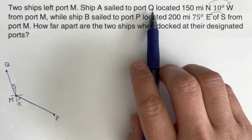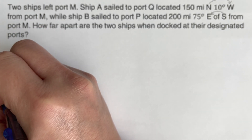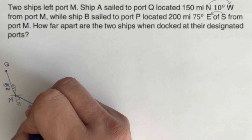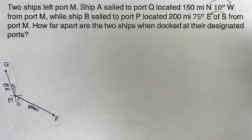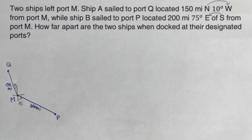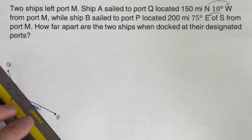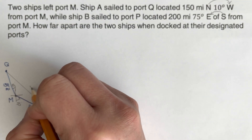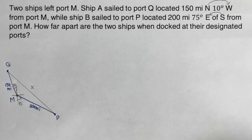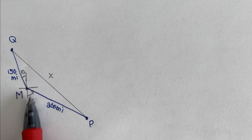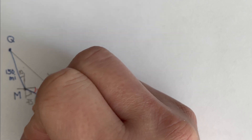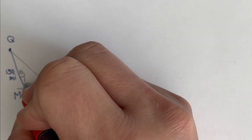The distance from port M to port Q is 150 miles, and from port M to port P is 200 miles. Looking at the angles in the triangle: one quadrant is 90 degrees but we have 75 degrees, so the complementary remainder is 15 degrees. Adding 90 degrees and 10 degrees plus 15 degrees, the included angle between the two known sides works out to 115 degrees.